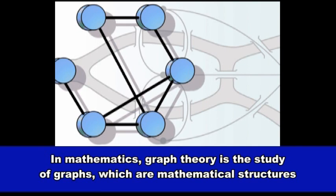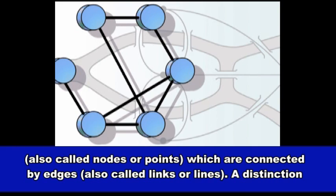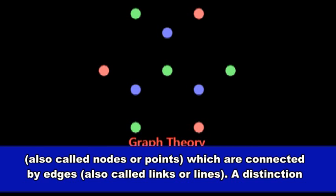In mathematics, graph theory is the study of graphs, which are mathematical structures used to model pairwise relations between objects. A graph in this context is made up of vertices, also called nodes or points, which are connected by edges, also called links or lines.